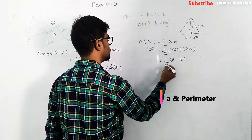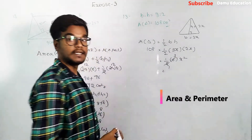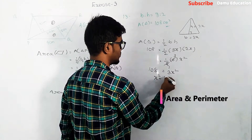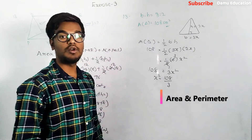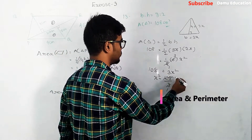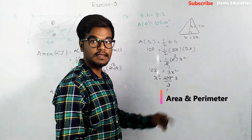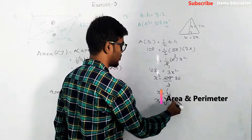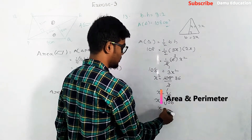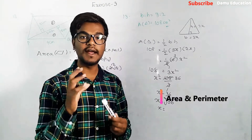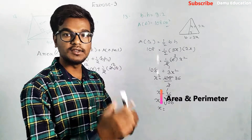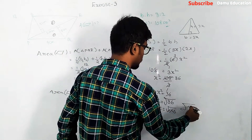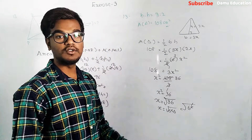Solving: ½ × 3x × 2x = ½ × 6x² = 3x² = 108. Therefore x² = 108 ÷ 3 = 36. Taking the square root: x = √36 = √(6²) = 6.